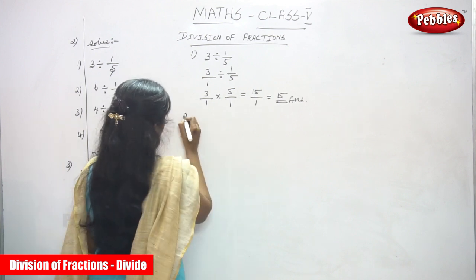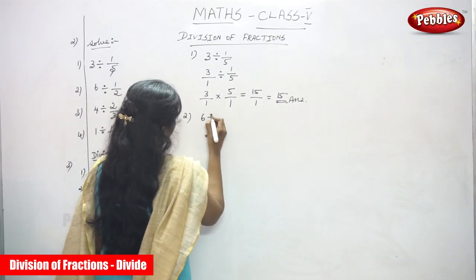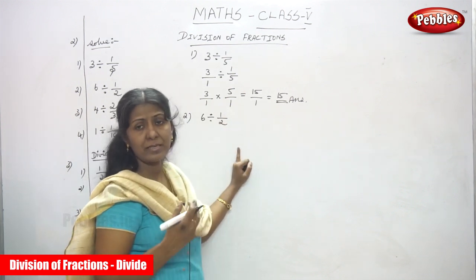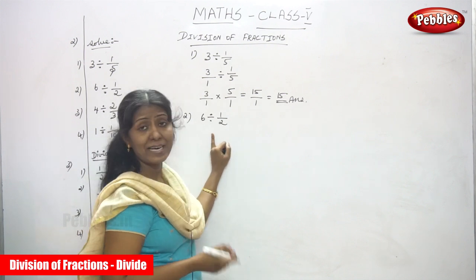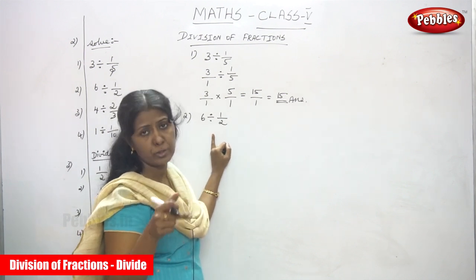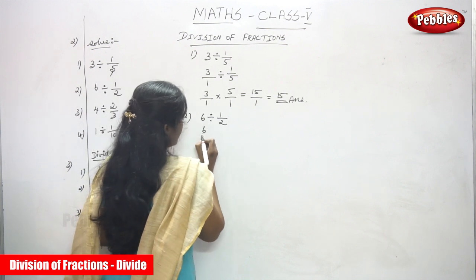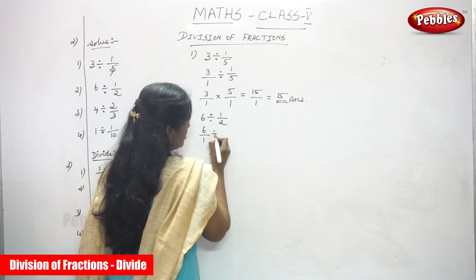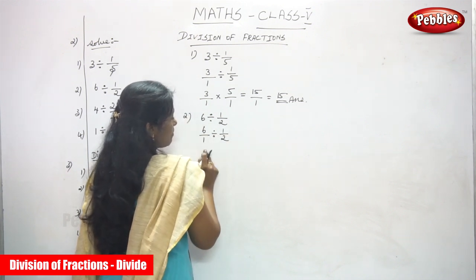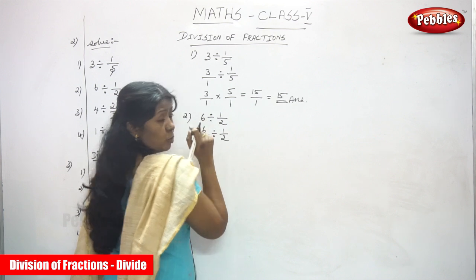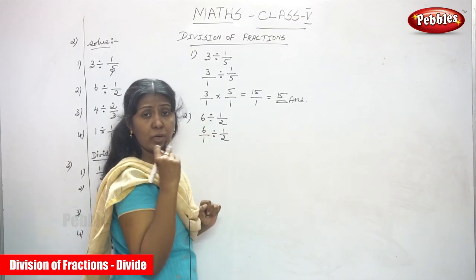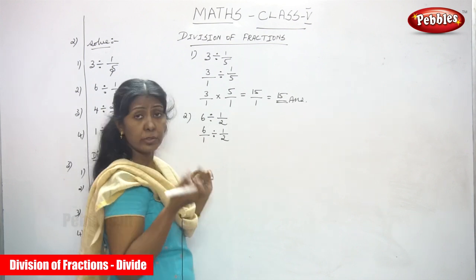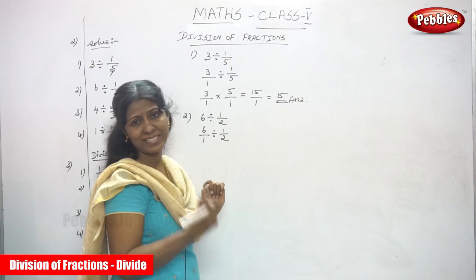Next sum: 6 divided by 1 by 2. It's a whole number and a proper fraction division. 6 divided by 1 by 2 — 6 is a whole number. Step 1: make the whole number as a fraction. Write 6 by 1, since there is no denominator, assume 1 as the denominator.